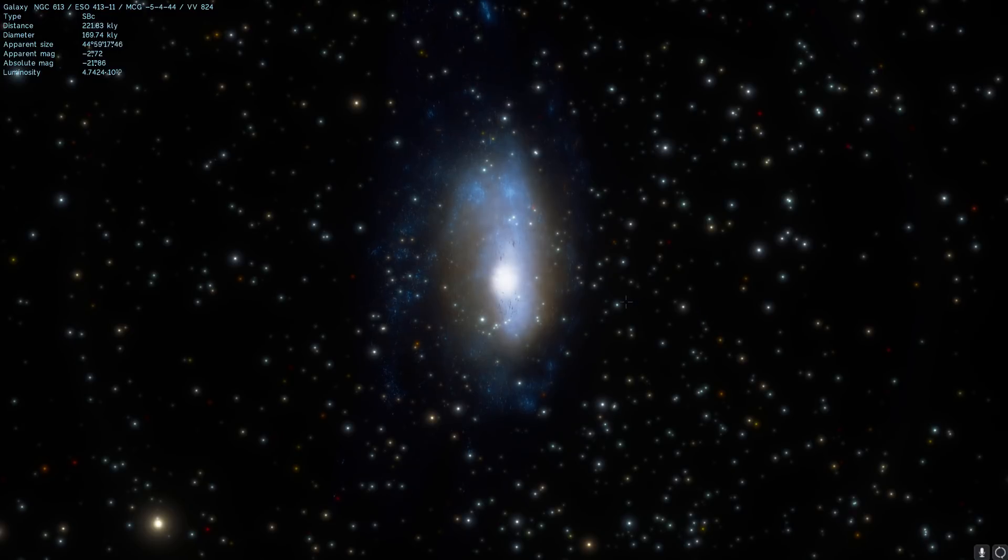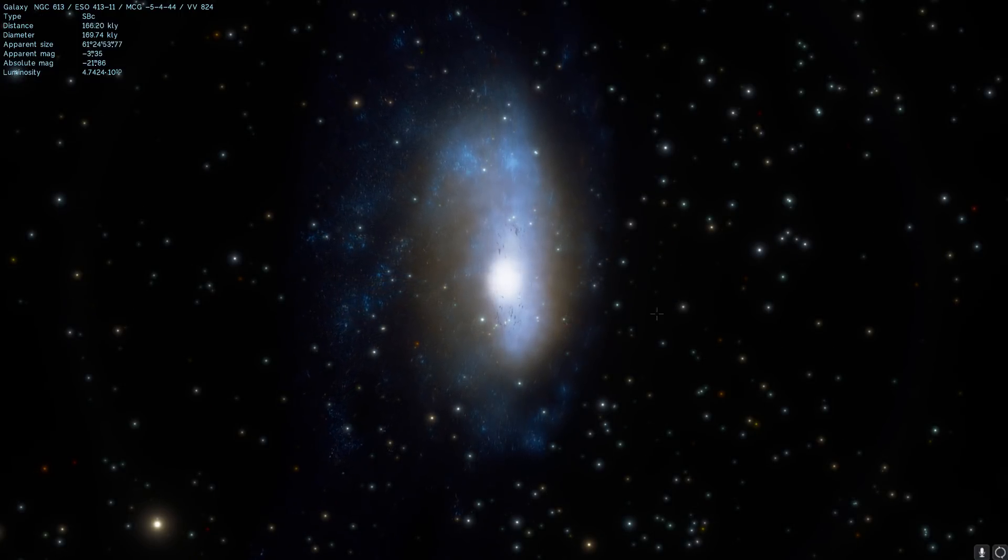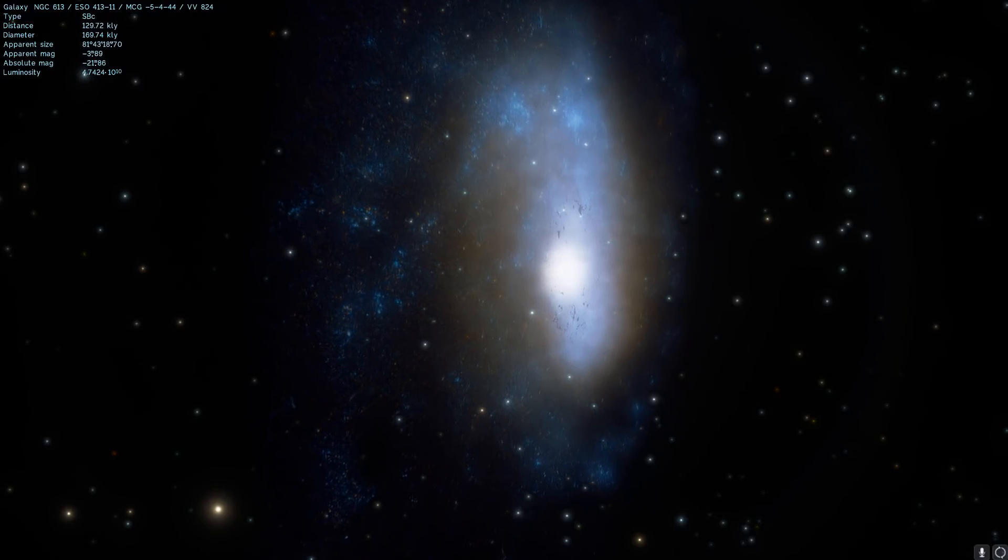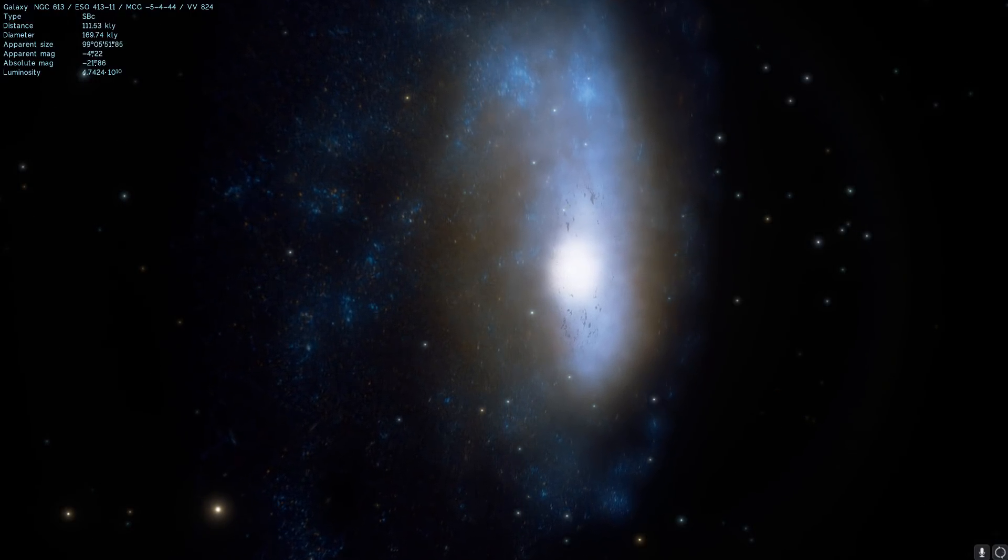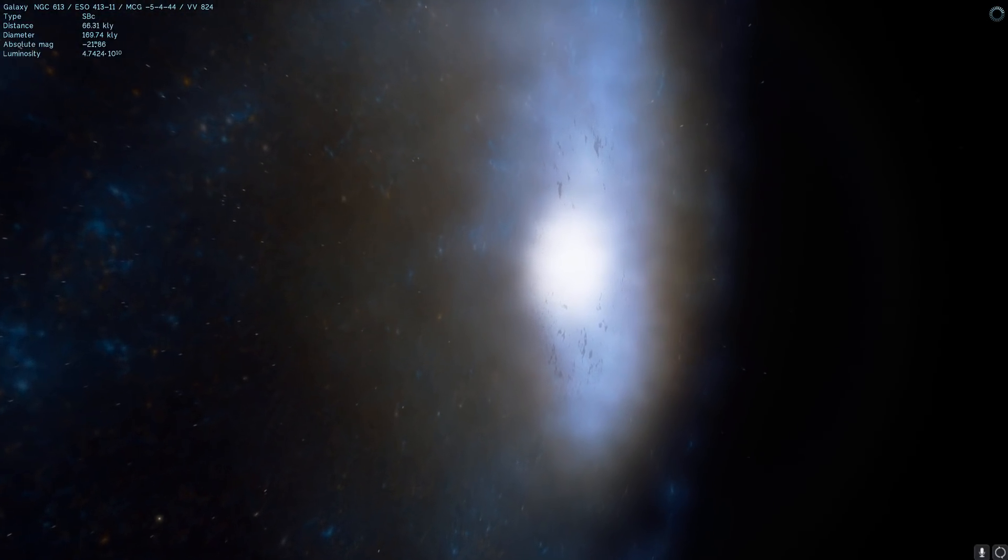Now this is the galaxy where the supernova occurred, the galaxy known as NGC 613 and we're gonna just quickly fly through and see what's inside. Possibly land on a planet somewhere. But unfortunately the supernova that we did observe is not really represented in the space engine so we can't really go there just yet. But this galaxy does look very cool.